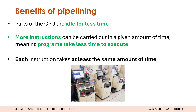A good analogy is supermarket self-checkout terminals. If only one of three terminals is open, you're queuing and wasting time waiting for others to finish. If all terminals are open, there's less queuing because you can start as soon as you're ready. For any individual customer, paying takes the same amount of time — but overall, throughput is much better. Similarly, pipelining can sometimes slow an individual instruction, but overall it definitely improves CPU performance.